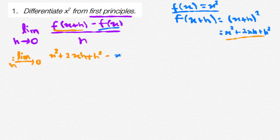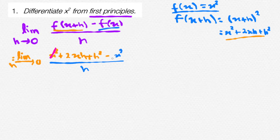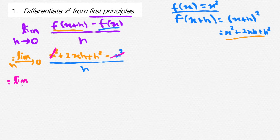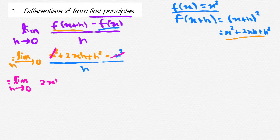Now, divide all of this by h. Whenever working with limits, every step of working out should start with the limit sign. So let's simplify this. We can cancel out x squared and minus x squared because that gives you 0. Our next line of working out would be the limit as h approaches 0, of 2xh plus h squared divided by h.